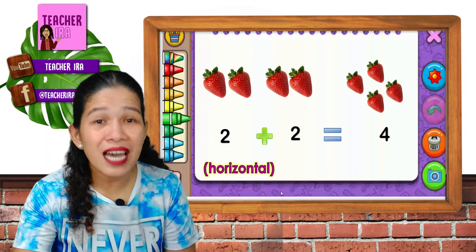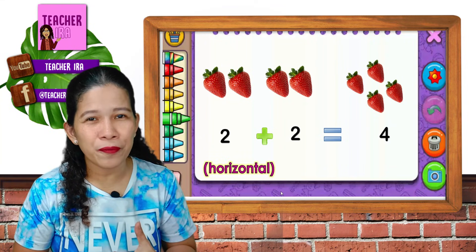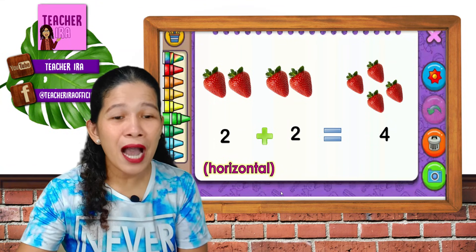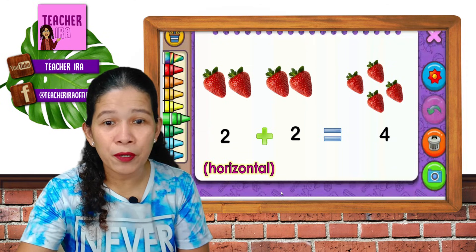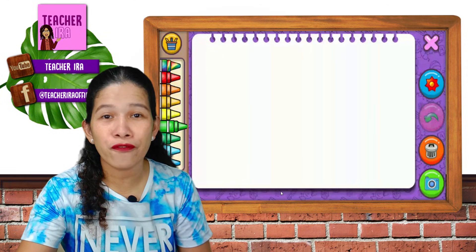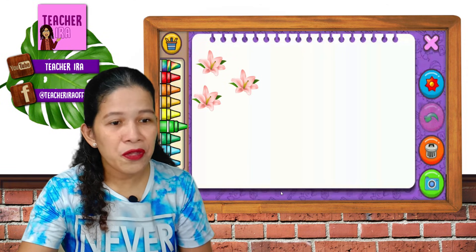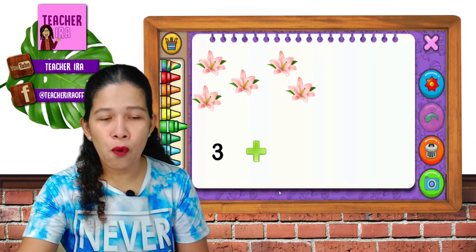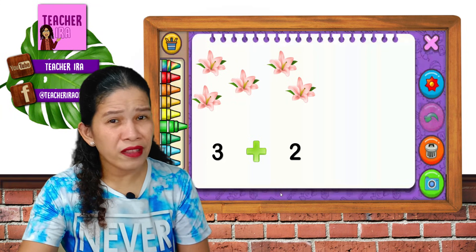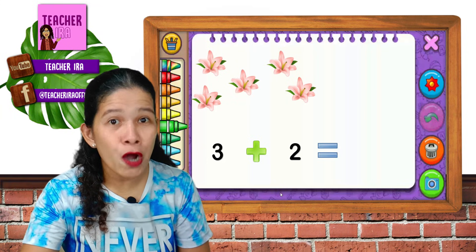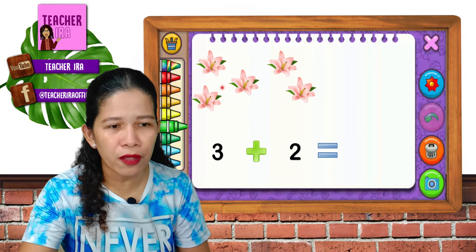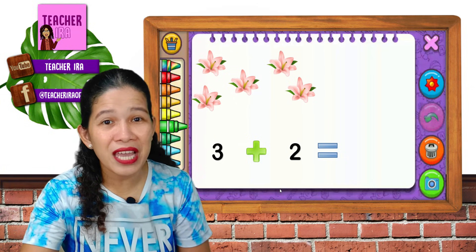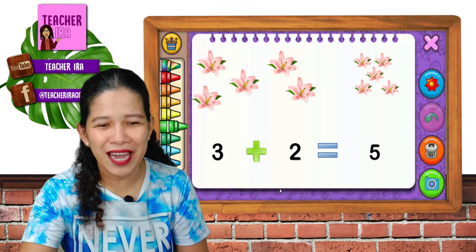Very good. That is what you call horizontal addition, where objects are arranged in a sideways way. Now we will have more examples — another horizontal way of adding numbers. Three flowers plus two more flowers. How many flowers are there in all? Let's count them together: one, two, three, four, five. So the answer is five.